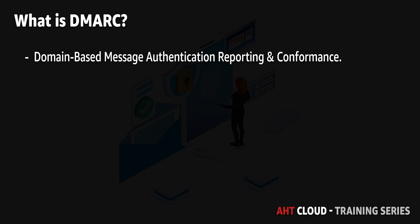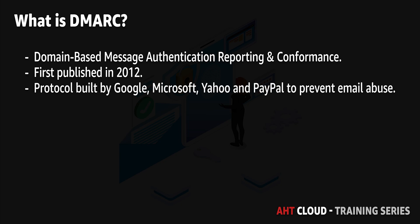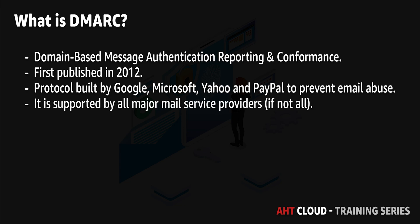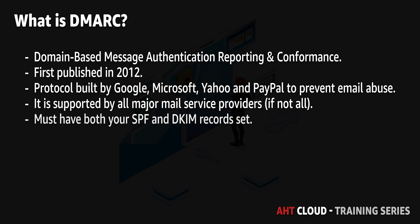DMARC was first published in 2012. It's a protocol built by Google, Microsoft, Yahoo, and PayPal to prevent email abuse. It is supported by all major mail service providers. DMARC is used to determine the authenticity of an email message — it lets you control who can send email using your domain and allows you to set various instructions for the receiving email server. To get started with DMARC, you must have both your SPF and DKIM records set up for your domain.